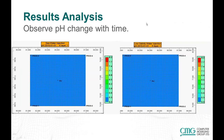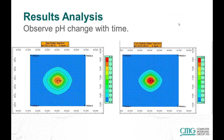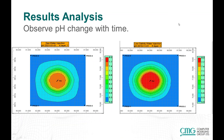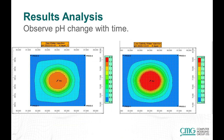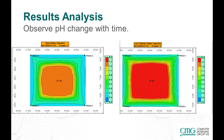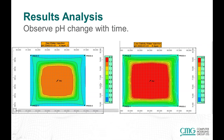Looking at pH changes with time using two movies: the seawater case on the left shows lower pH, while the low salinity case on the right shows higher pH. We can also see that the pH changes occur over a fairly large area.